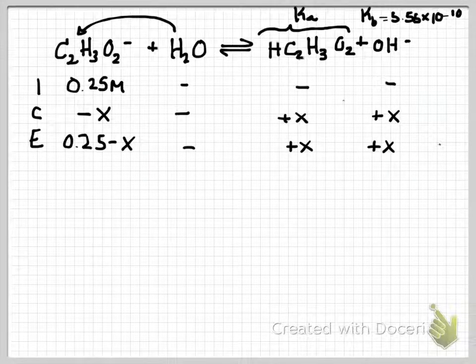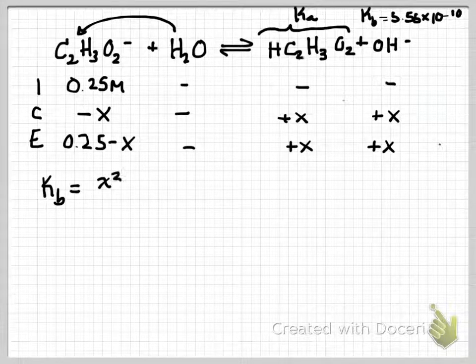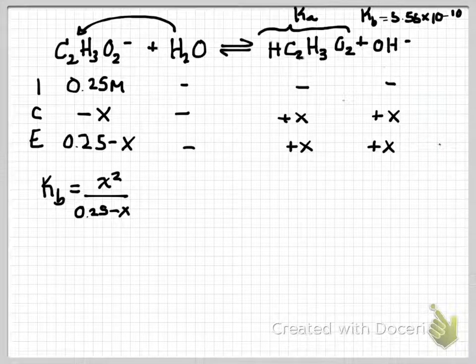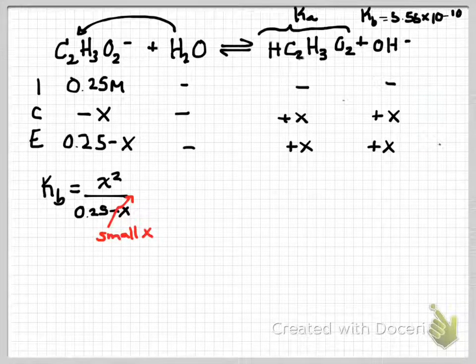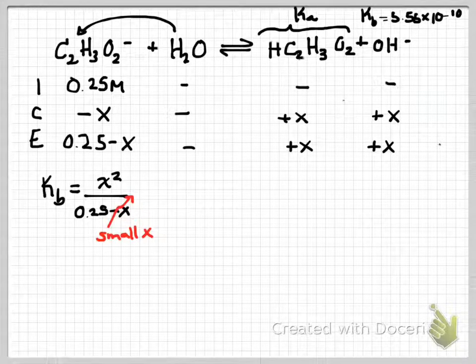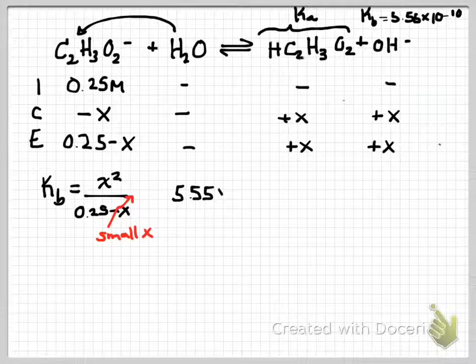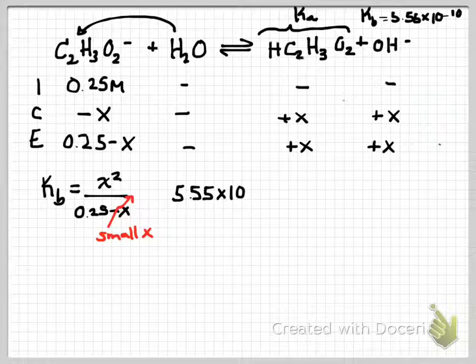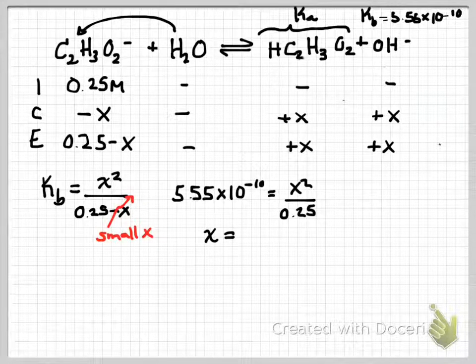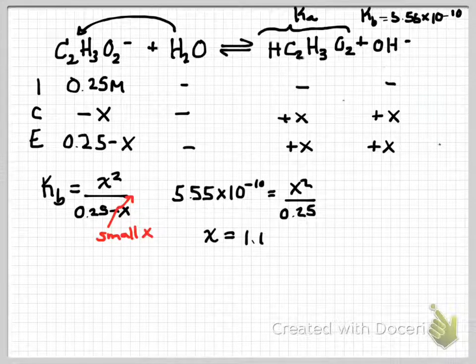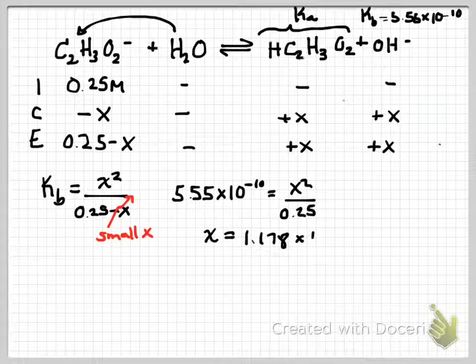So when we go to put this in KB, products over reactants, we get X squared over 0.25 minus X. And we will use the small x approximation. And so that gives us 5.55 times 10 to the minus 10 equals X squared over 0.25. And X solves out to be 1.178 times 10 to the minus 5th molar.